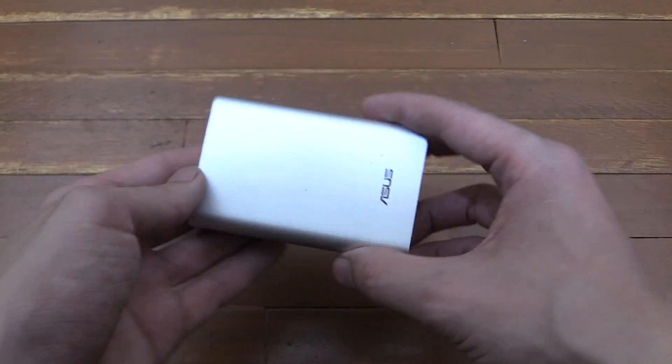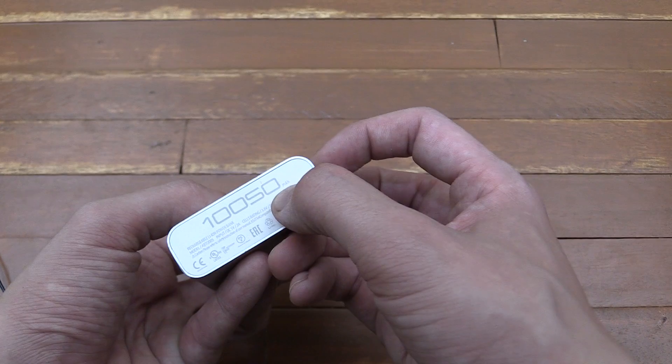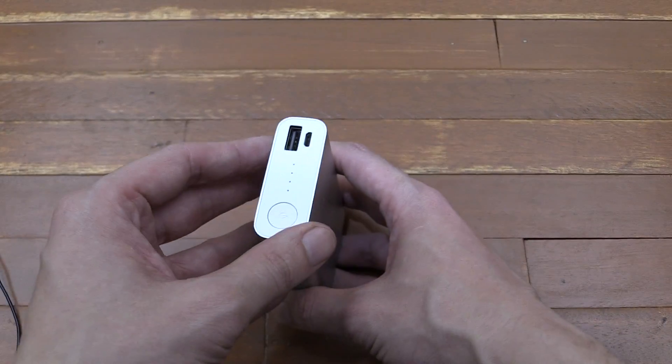Hi everyone, today I'm going to tell you how you can measure the capacity of your power bank. For instance, this one is meant to be 10,050 milliamp hour. So how can you check it?